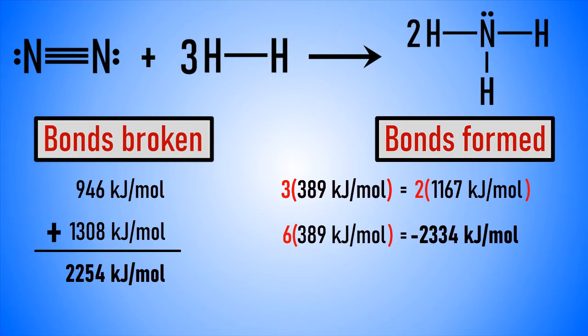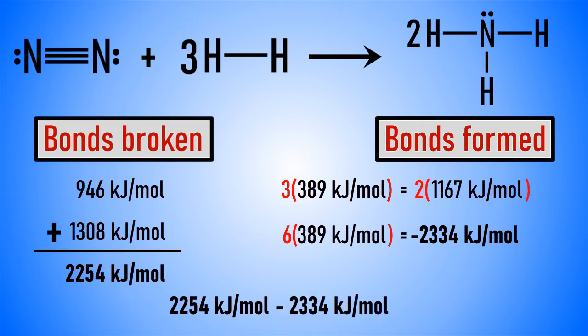Remember, bond formation is exothermic. So if we take the 2,254 kilojoules per mole absorbed due to breaking of bonds and subtract the 2,334 kilojoules per mole released due to formation of bonds, we get an enthalpy change of negative 80 kilojoules per mole for this reaction. So this reaction is exothermic — it releases energy.